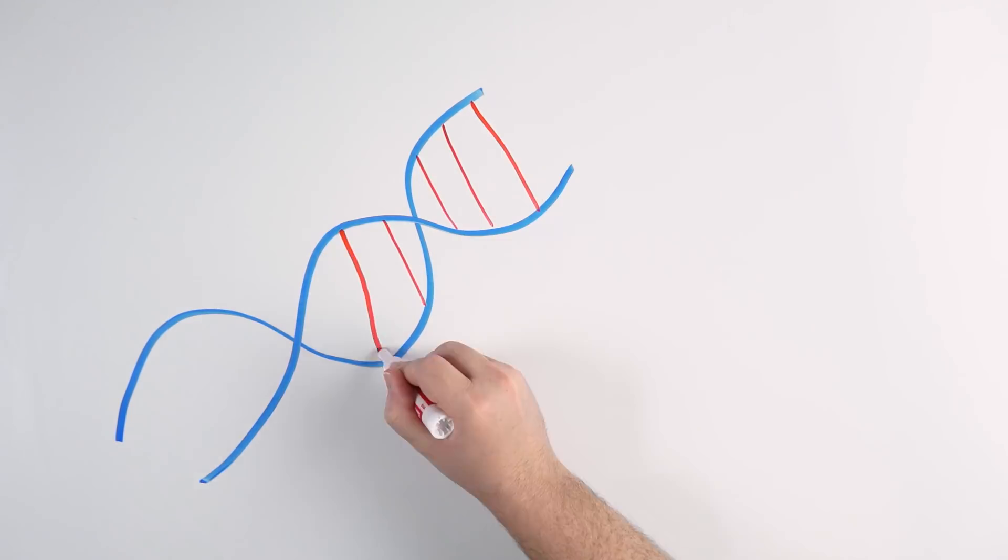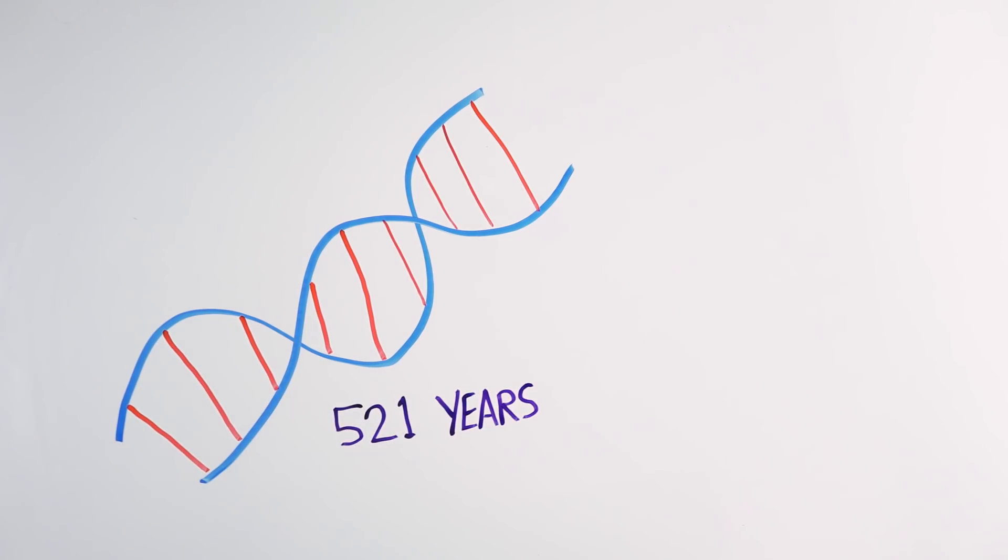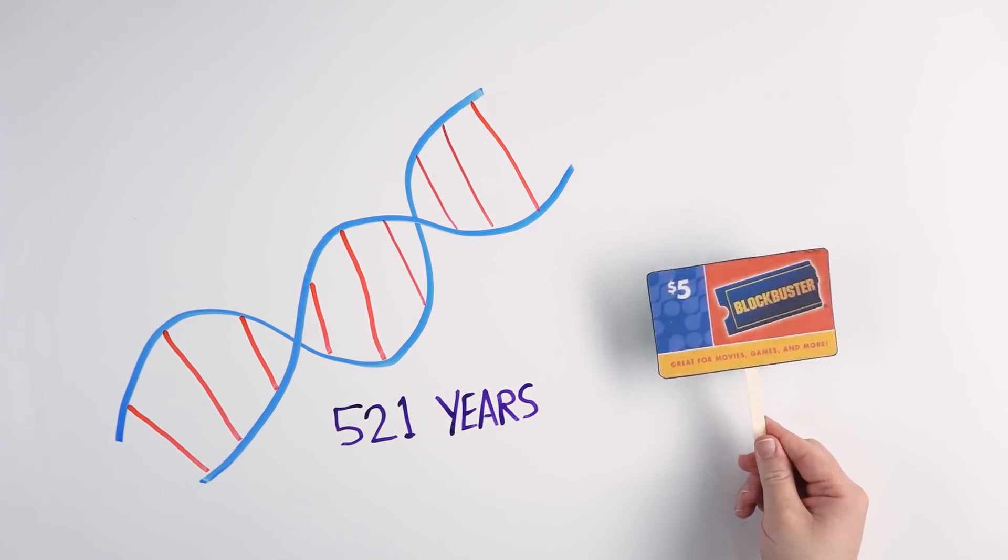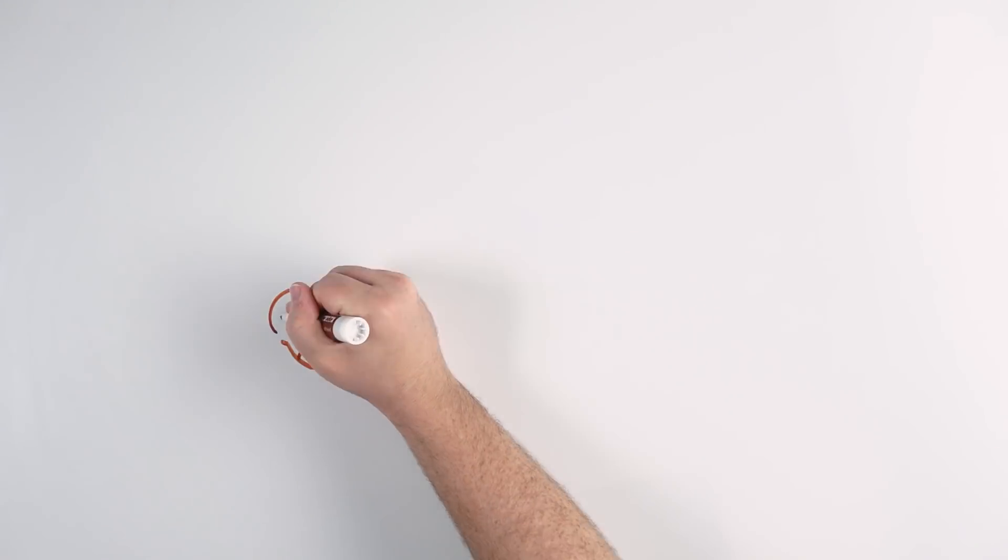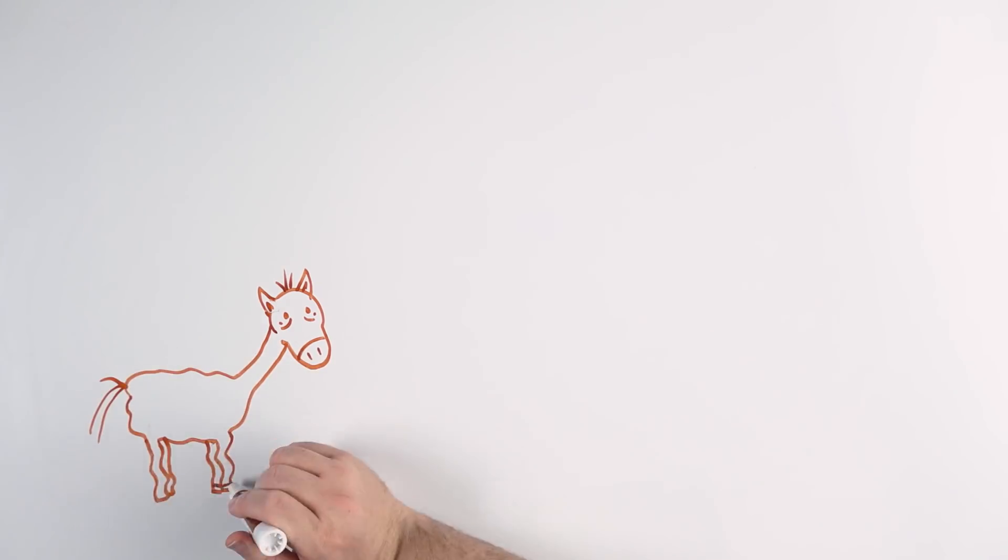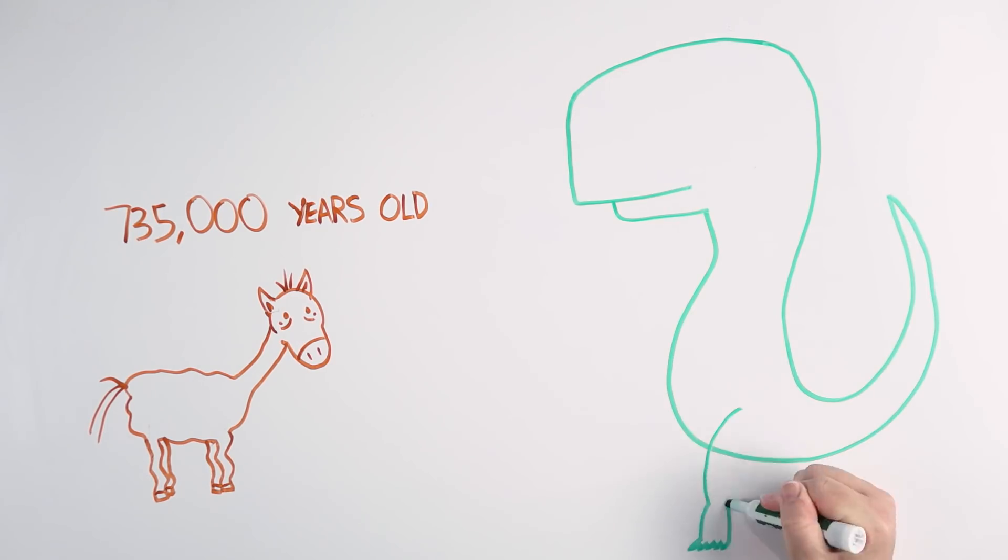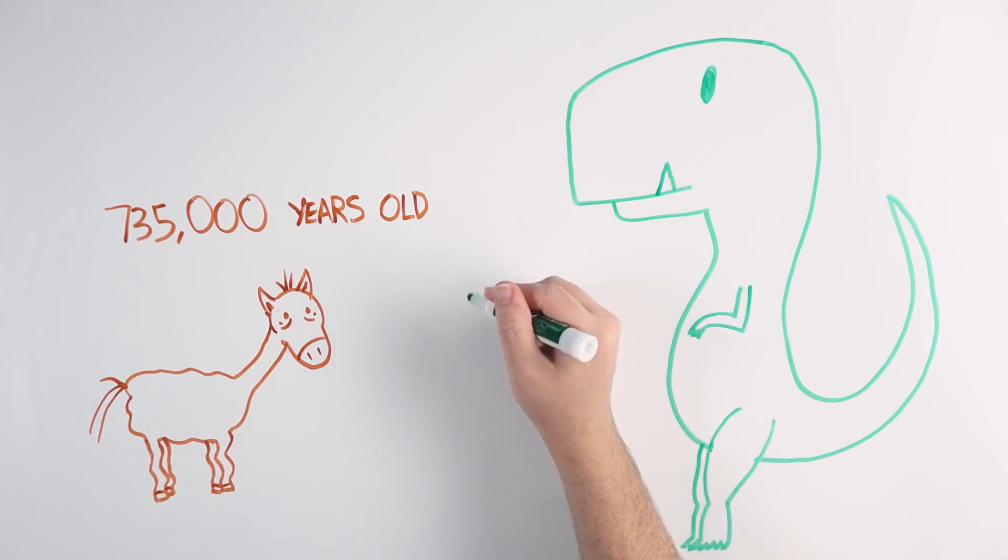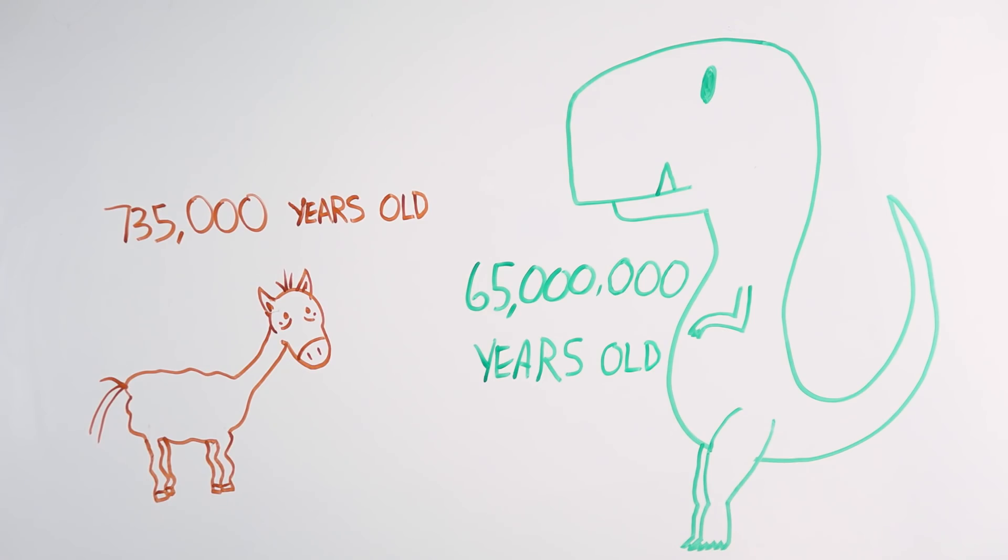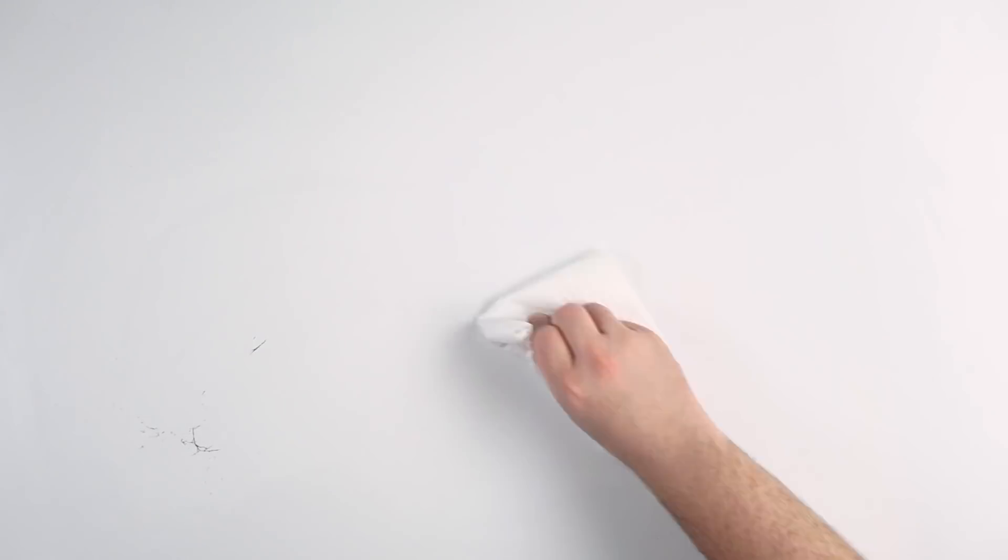The half-life of DNA is 521 years, meaning that even in perfect conditions, after 1.5 million years, Tom's organic milk stout is about as useful as a blockbuster gift card. Considering that the oldest DNA that's ever been sequenced was from a 735,000-year-old horse and the youngest dinosaurs we know of are 65 million years old, it's not looking good. And even Tom's perfectly stored frozen yogurt is still very unlikely to provide a viable sample.